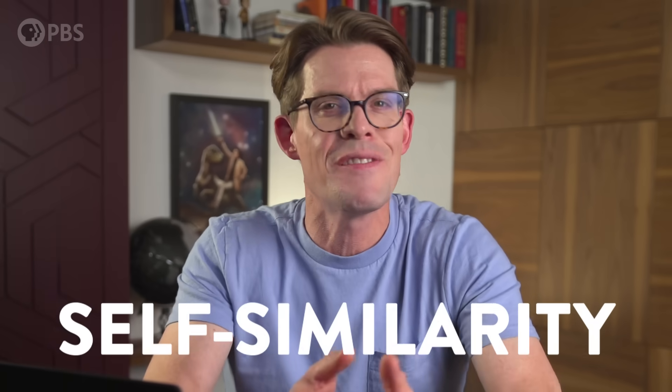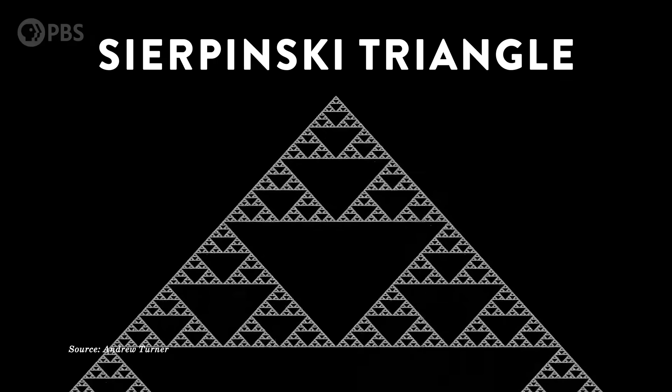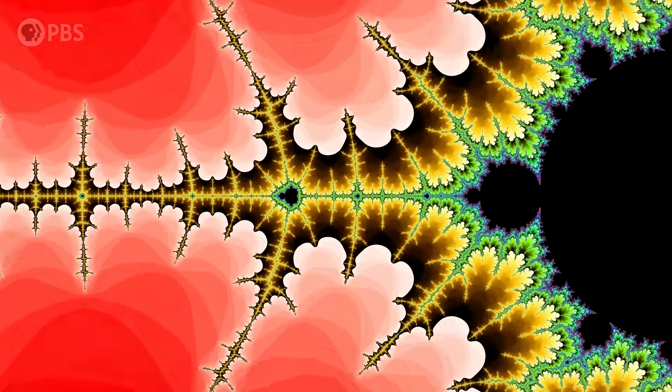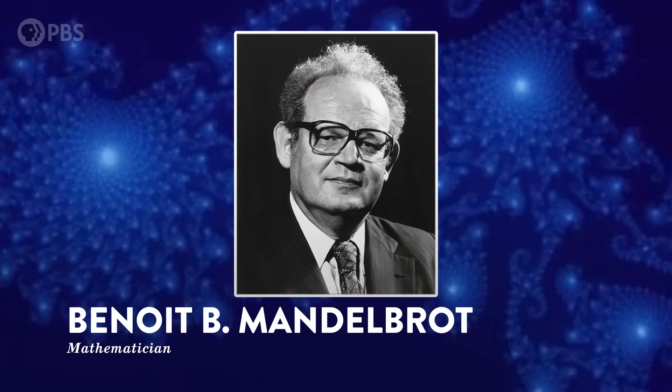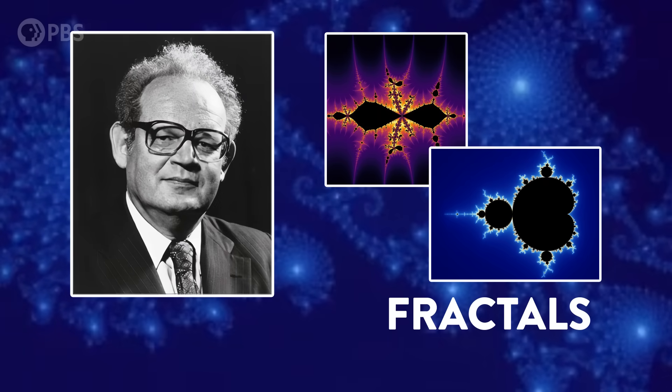I don't know if you've ever looked at a tree as deeply as I have, but that weird thing where part of the tree also looks like a tree, that's called self-similarity. It's like one of those triangles with an infinite number of smaller triangles inside it, or whatever this thing is. And unlike the self-similar shapes we see in nature, these perfectly self-similar shapes are infinite — we could zoom in or out and continue to see those patterns repeat forever.